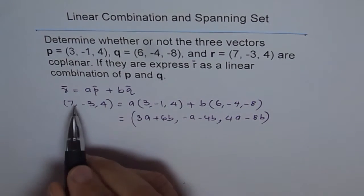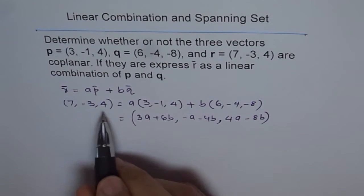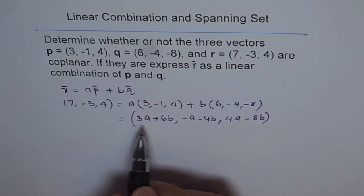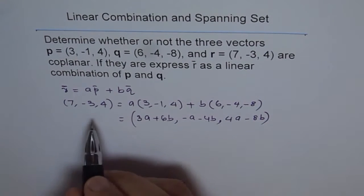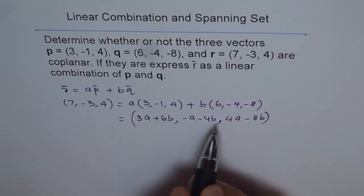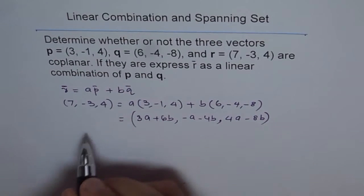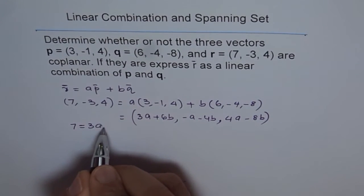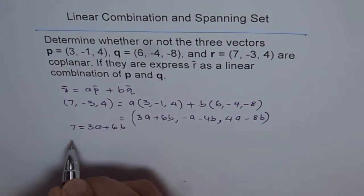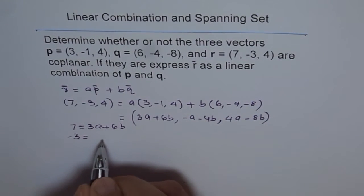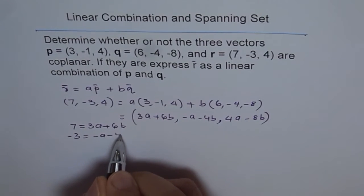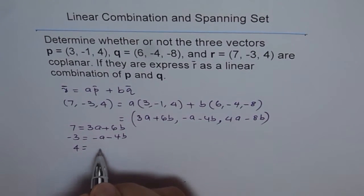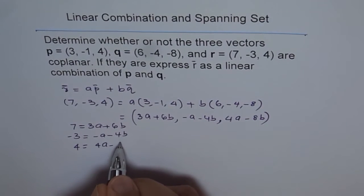To have a solution, the corresponding direction numbers should be equal. We equate each component and solve for A and B, giving us three equations: 7 = 3A + 6B, -3 = -A - 4B, and 4 = 4A - 8B.